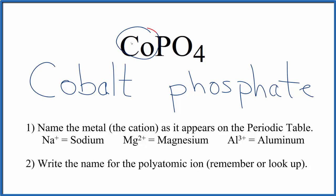But cobalt, that's a transition metal. So we need to write the charge here between the names. We know that the whole phosphate, we remember or we look up, is 3 minus. The cobalt, it has to be 3 plus. So we write the Roman numeral 3 in parentheses between the names.